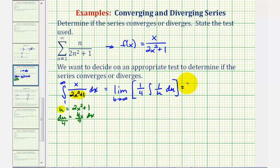This is going to be equal to the limit as b approaches infinity. This is going to be just one-fourth natural log u, or one-fourth natural log of u, which is two x squared plus one. The limits of integration are from one to b.